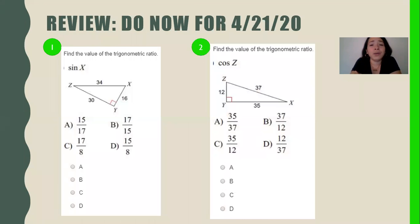Let's look at our do now. I noticed that a few of you submitted your do now. Thank you for doing that before this class today. You can always do it afterwards, but I like when you guys get to try to do it on your own first before we review it in class. Let's look at question number one. It says find the value of the trigonometric ratio. We're going to write SOHCAHTOA to remind us.